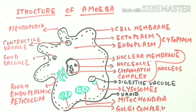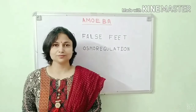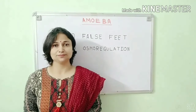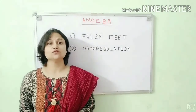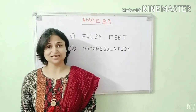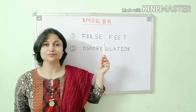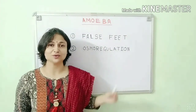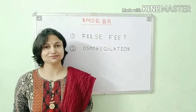You can see the food vacuole and pseudopodia in the labeling. Just opposite to that is the uroid, which is the posterior part of amoeba, while pseudopodia is at the anterior part. So students, that was the structure of amoeba. Now two questions for you: which organelle of amoeba means 'false feet'? And which organelle helps in osmoregulation? Write your answers in the comment box. Thank you!